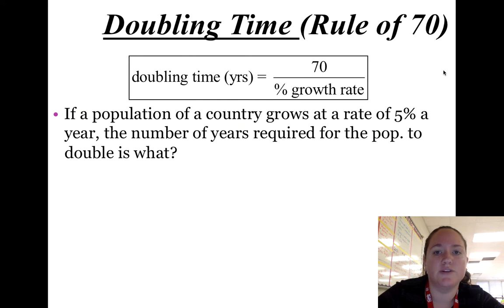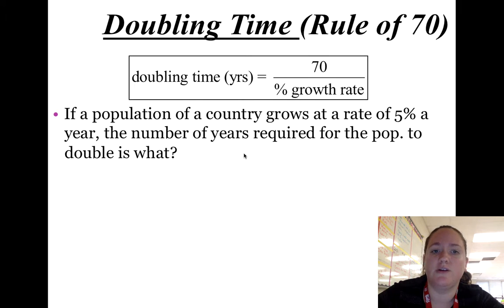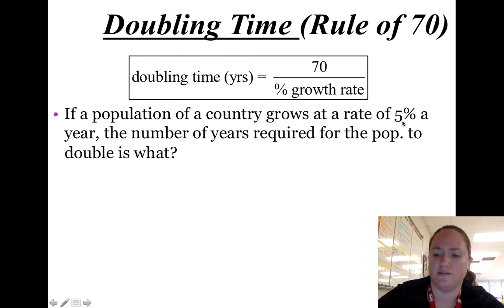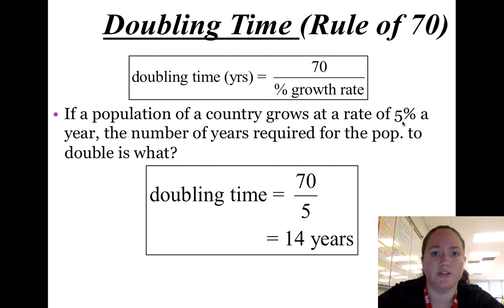Here is the rule of 70 again, written more mathematically: doubling time = 70 ÷ percent growth rate. Try this example — pause the video: if a population grows at 5% per year, how many years are required for it to double? A common mistake is converting 5% to a decimal — you do not need to do that. Just calculate 70 ÷ 5 = 14 years for the population to double.